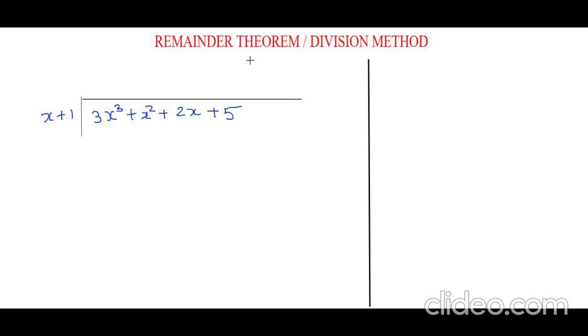Hello, today we are going to learn about the remainder theorem using the division method. This is our dividend and this is the divisor. In this method, first we take the first term of the dividend and the divisor and divide them: 3x³ divided by x, which would be 3x².